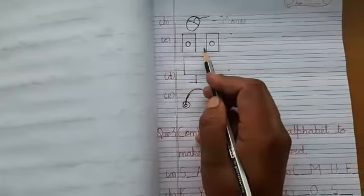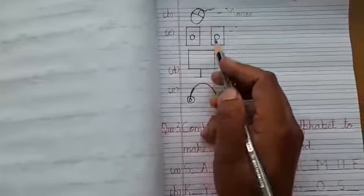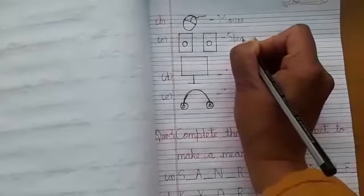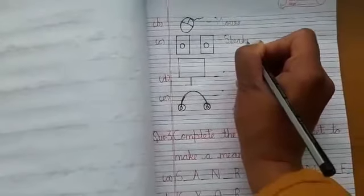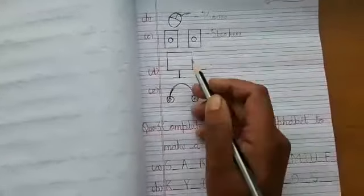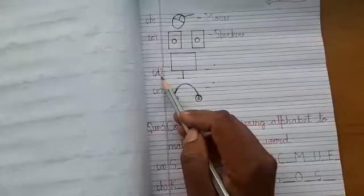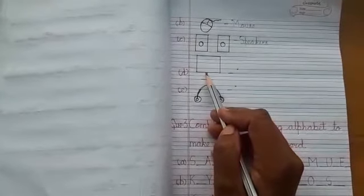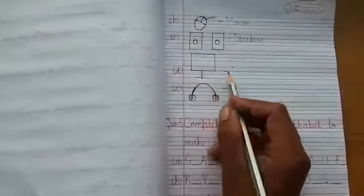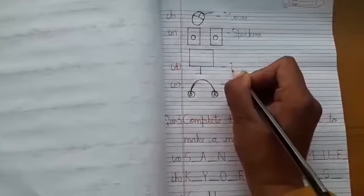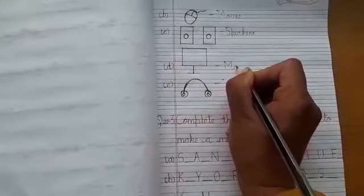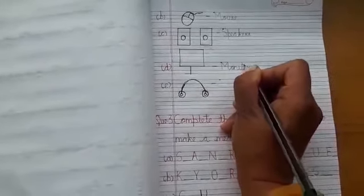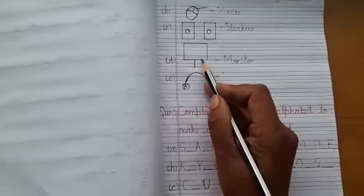(c) Identify this image — these are speakers. Spelling of speakers: S-P-E-A-K-E-R-S. (d) Identify this image — this is a monitor. Spelling of monitor: M-O-N-I-T-O-R.